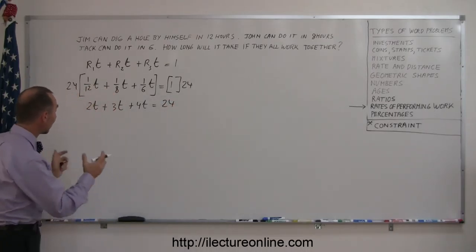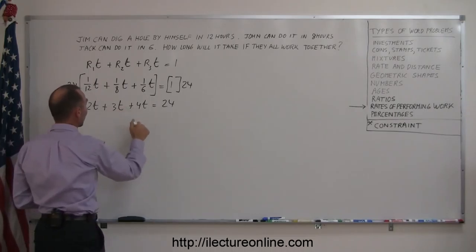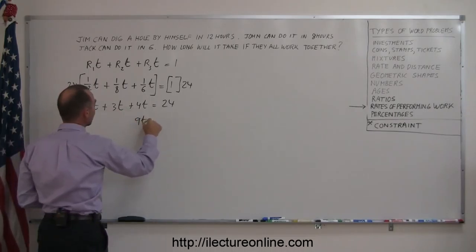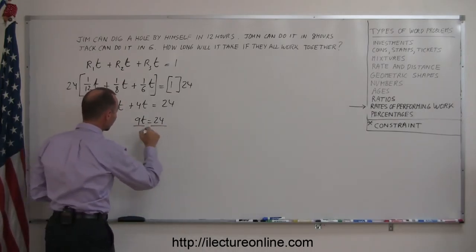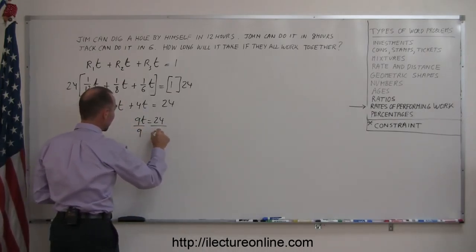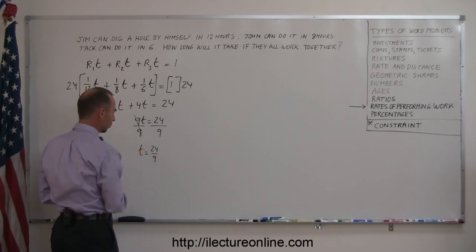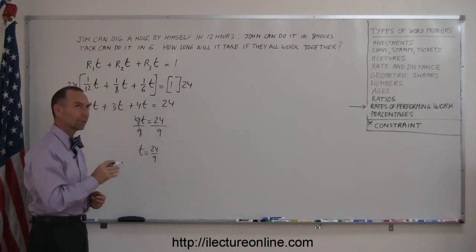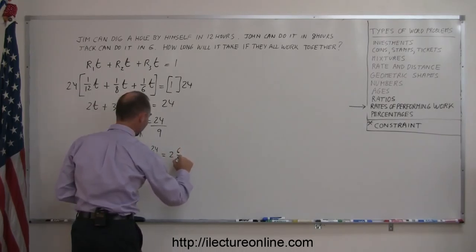Now I go ahead and combine all like terms, so I have 2 plus 3 is 5 plus 4 is 9, so 9t equals 24, and then you divide both sides of the equation by the numerical coefficient in front of the variable, that's 9. 9s cancel out, t equals 24 divided by 9. 9 goes into 24 2 times, that leaves me 2 times 18. So that's equal to 2 and 6/9ths.